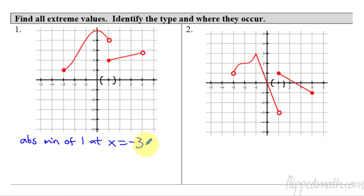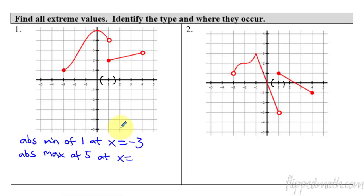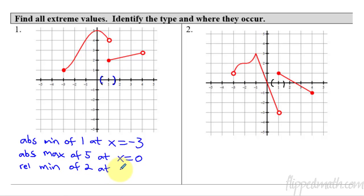It's important to understand that the y value and the x value are completely different. Moving on: what do we have here? This is a maximum point. Is it relative or absolute? This is absolutely the highest point, so absolute max of 5 at x equals 0. Now I have an open circle—that's nothing. But the point below it: I construct an open interval. Is it lower than the points to the right and to the left? Yes. So that represents a relative minimum of 2 at x equals 1.